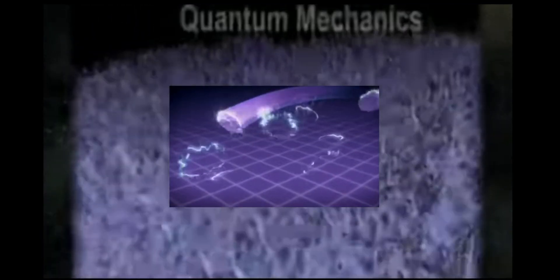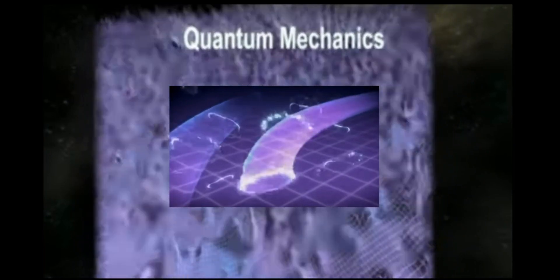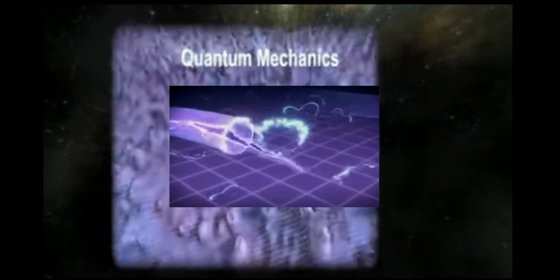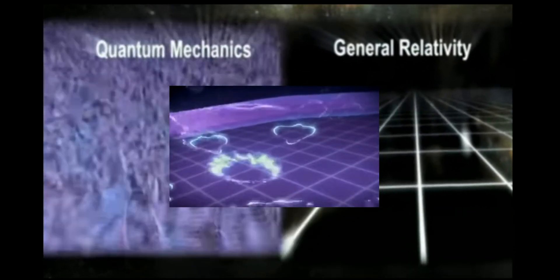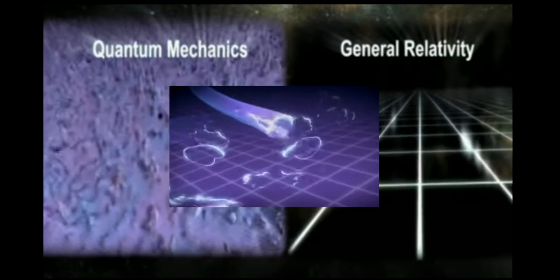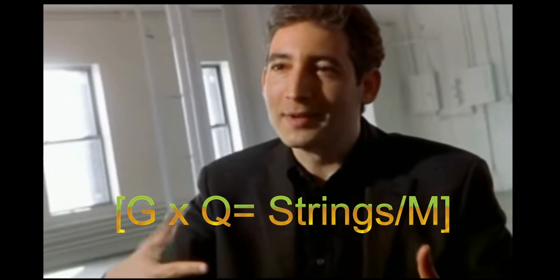Tiny wiggling strands of energy that look like strings calm the chaos. They resolve the conflict between our jittery, unpredictable picture of space on the subatomic scale and our smooth picture of space on the large scale — the jitteriness of quantum theory versus the gentleness of Einstein's general theory of relativity. It spreads them out by taking the old idea of a point particle and spreading it out into a string, so the jittery behavior is sufficiently less violent that quantum theory and general relativity stitch together perfectly within this framework.